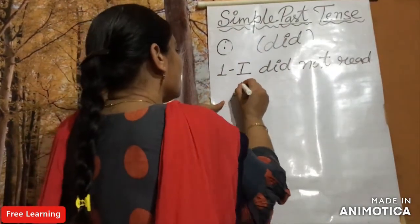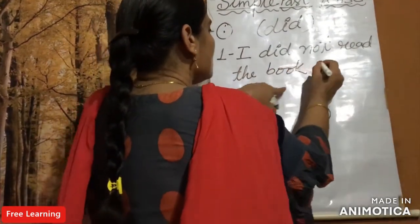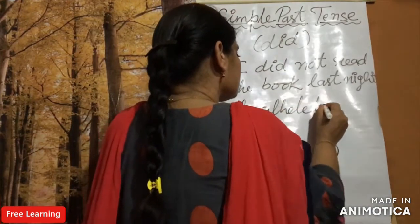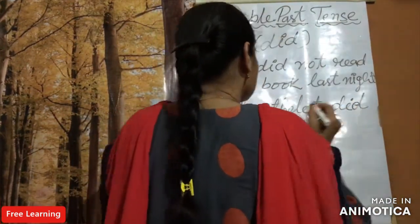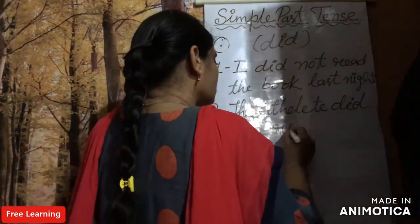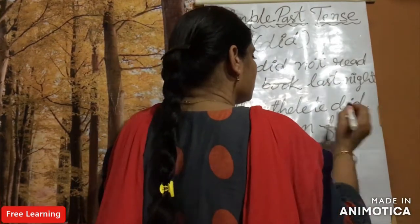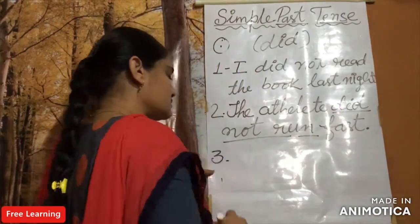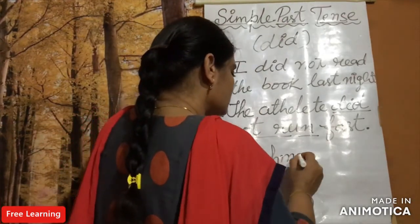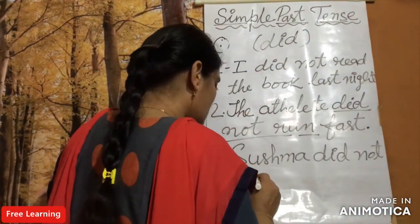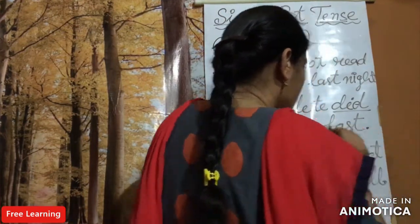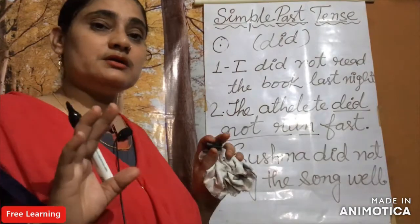Examples of negative sentences: 'I did not read the book.' The athlete did not run fast. Sushma did not sing the song well. Notice that 'did not' is followed by the first form of the main verb. Also, there are certain words that serve as signs of the past tense.